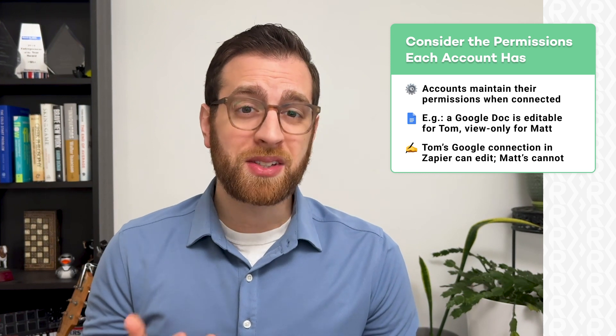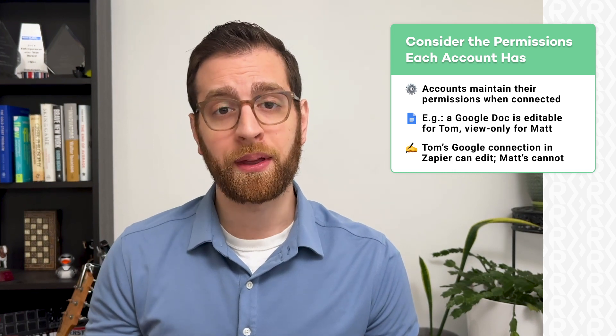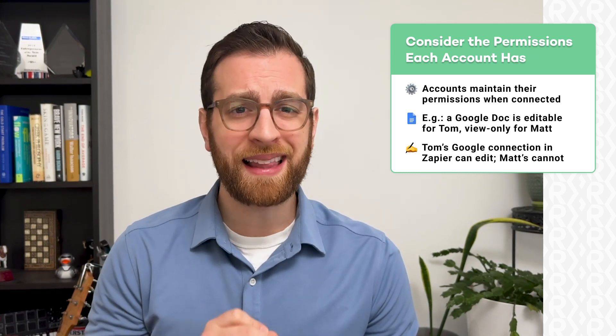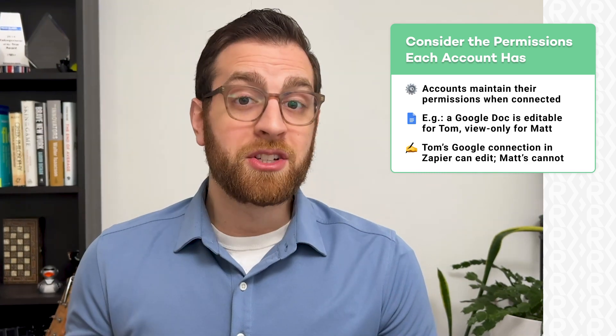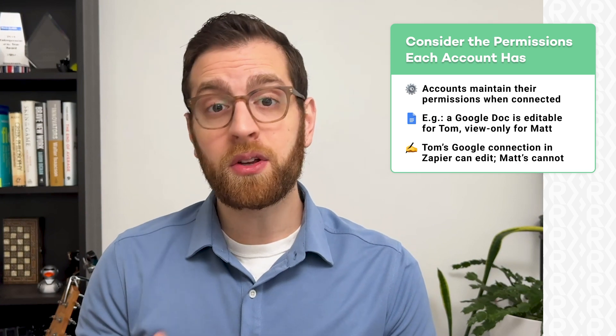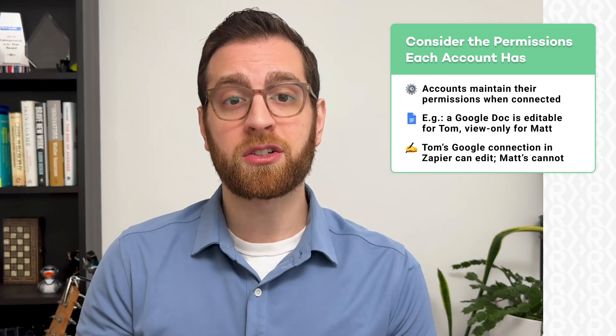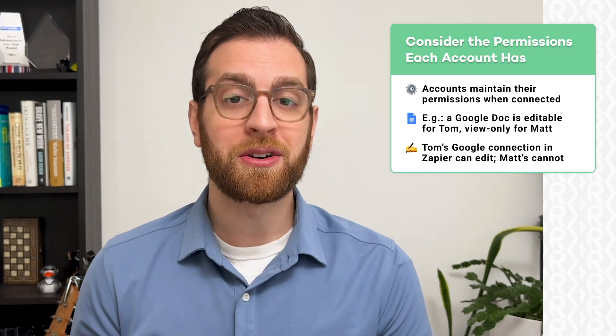However, in some cases you can set the permission level separately by using a personal access token to authenticate the app. Unfortunately, this option only applies to a few select apps like Airtable. In general, the best approach to using Zapier securely is to stick with the same precautions you'd use with any web app: keep your passwords complex and unique, and only grant necessary and appropriate permissions to your team members.